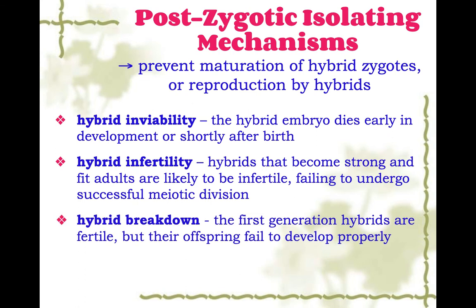The last post-zygotic mechanism is hybrid breakdown. Sometimes if the two species that created the hybrid are quite similar — have similar numbers of chromosomes, for example — the first-generation hybrids might be fertile, but then their offspring don't develop properly at all, so the lineage can't be propagated any further.